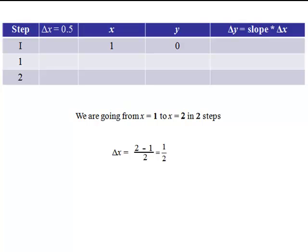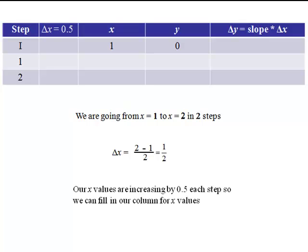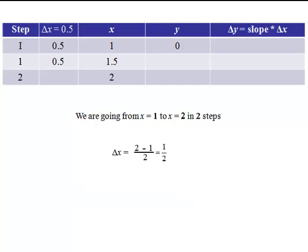Now that we know our delta x, that's going to be our delta x through the whole problem, so we can calculate what our x values will be. So we're starting at 1 and moving by 0.5 each time, so our x values will be 1, 1.5, and 2. So we can do the x values without ever actually doing anything with the differential equation.